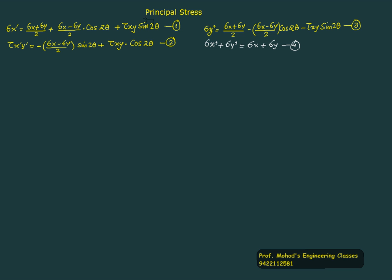We will start with the derivation of principal stress. We already derived four important equations. One is sigma x dash equals sigma x plus sigma y by 2, plus sigma x minus sigma y by 2 into cos 2 theta, plus tau x y sin 2 theta. We want to find the principal stress, that is the maximum value of stress, so we differentiate this equation with respect to theta and solve.